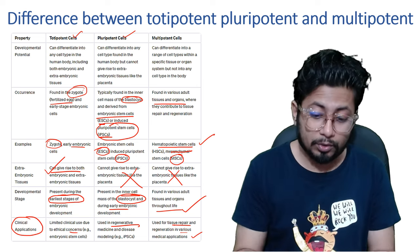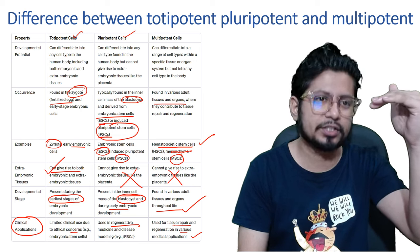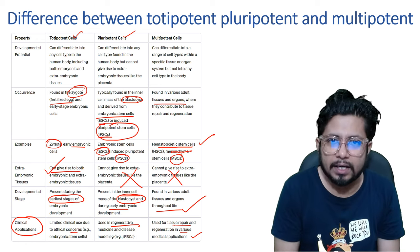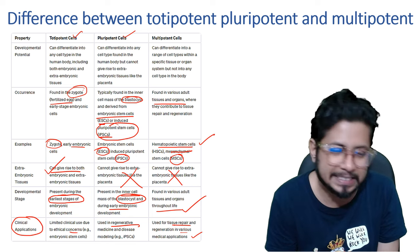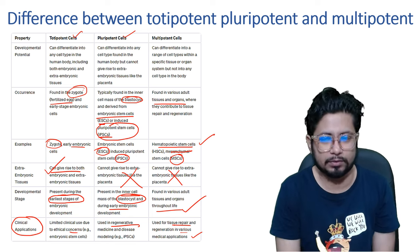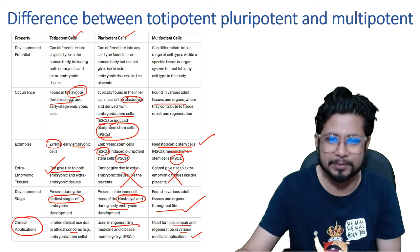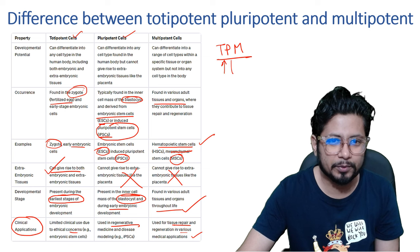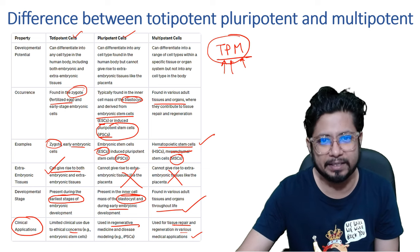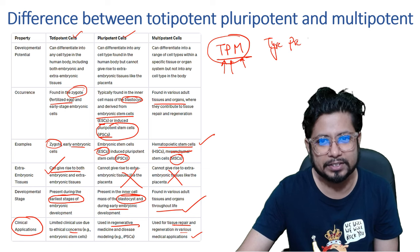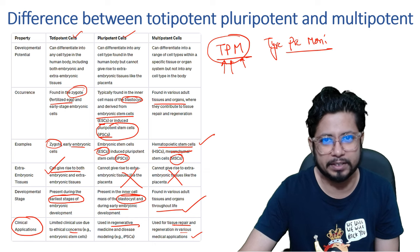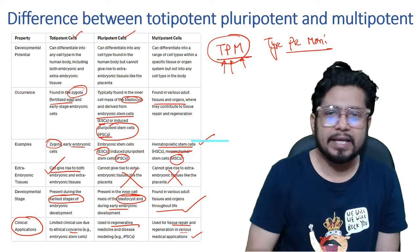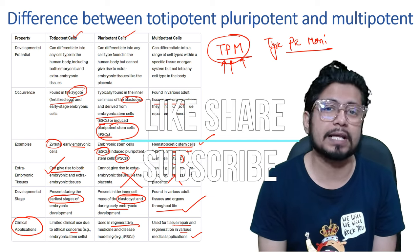The crucial difference: totipotent is the highest potency, then pluripotent, then multipotent — TPM. The easy mnemonic to remember is 'Tire Pressure Monitoring System' — TPMS — which is present in cars and two-wheelers nowadays. So: Tire = Totipotency, Pressure = Pluripotency, Monitoring = Multipotency. That's how you can easily remember it. I believe you now have a clear idea and should never confuse totipotent, pluripotent, and multipotent again. If you liked this video, please hit the like button, share it with your friends, and subscribe for more videos. Thank you, bye.